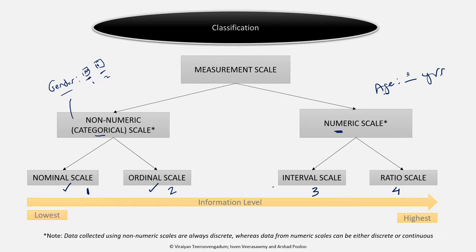Here we have our four levels of measurement. The lowest amount of information is captured by the nominal scale, and the highest by the ratio scale. So the lowest level would be nominal, then ordinal, then interval, and then ratio — the highest level. If you had the choice, you'd always choose a higher level of measurement. But for some variables, such as gender, it's impossible to use higher levels — you can only settle for a nominal scale.